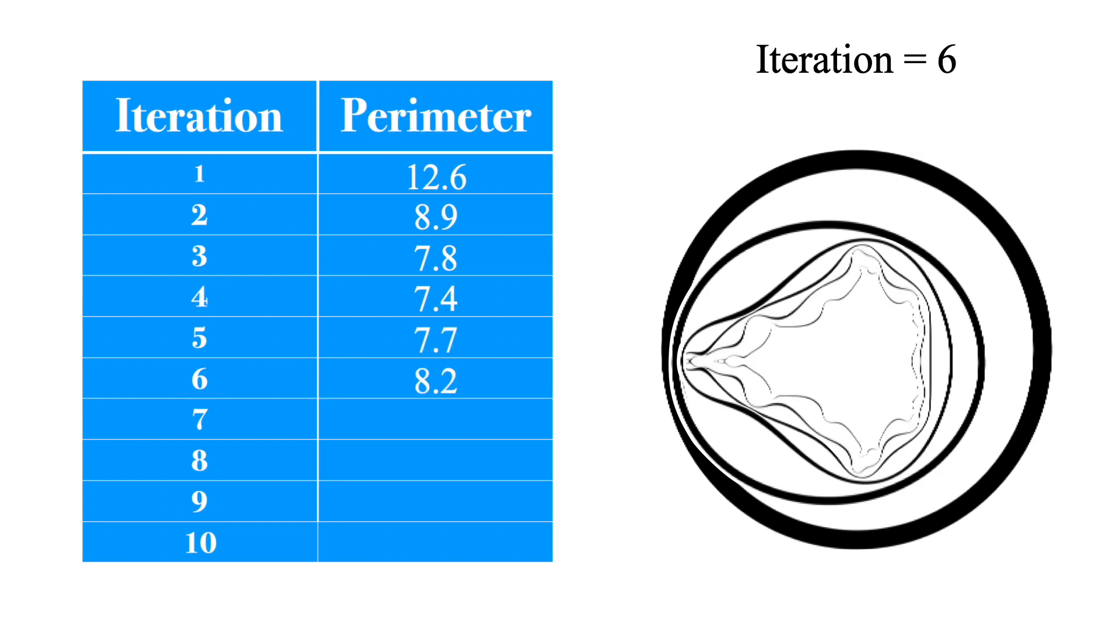At the next step, the perimeter goes back up. And after this stage, it simply continues to get higher and higher.